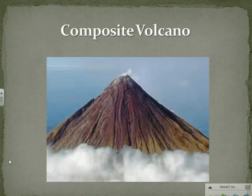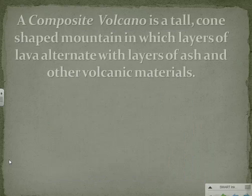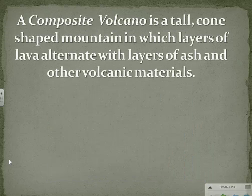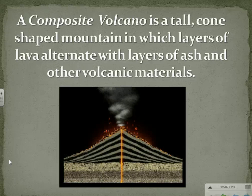Composite Volcano. A composite volcano is a tall, cone-shaped mountain in which layers of lava alternate with layers of ash and other volcanic materials.